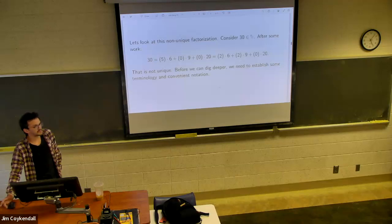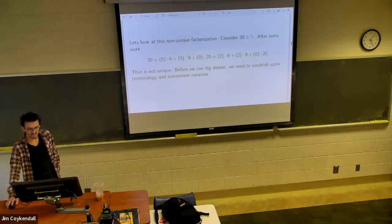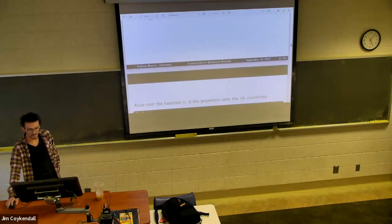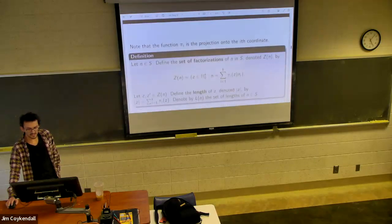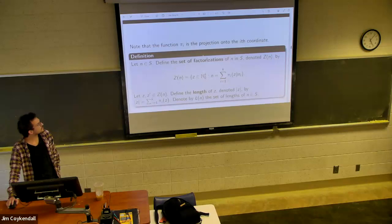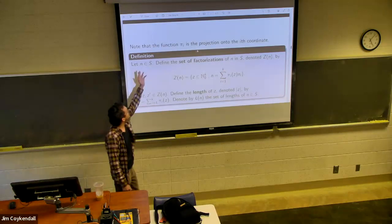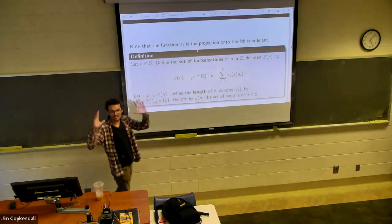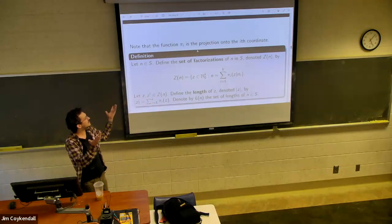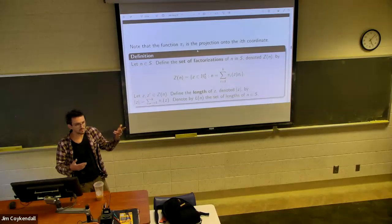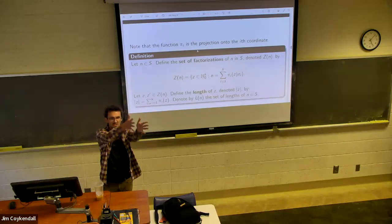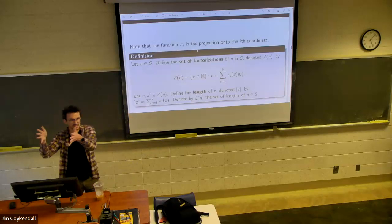So clearly the factorization here is not unique. So as we study non-unique factorization, we're going to need some notation, terminology, and whatnot to get a better understanding of what's going on. So it's super convenient to use this pi notation with defining it. But all that's saying is you have an ordered pair. So let's say you have an ordered pair. Then pi sub 1 would just say, okay, let's just look at the first coordinate, or let's just look at the second coordinate.